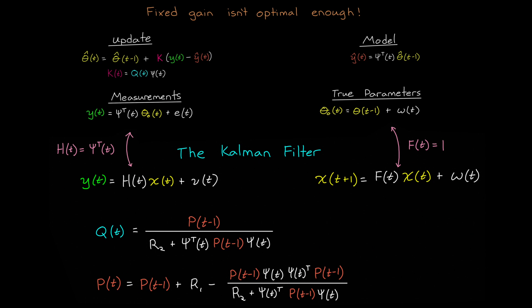So now to find the gain Q of t, we can use the Kalman filter to solve for the optimal gain, where p is the prediction covariance, r2 is the measurement covariance, and r1 is the process covariance.